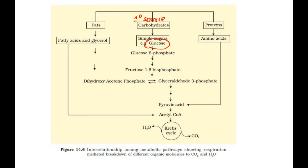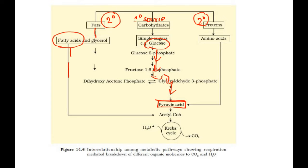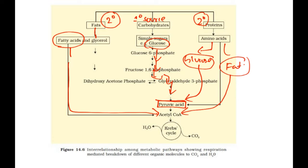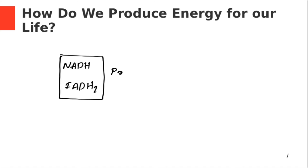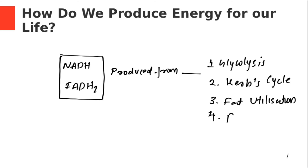To summarize the overview: carbohydrates are converted into glucose by digestion, then converted into pyruvic acid through glycolysis. The two secondary energy sources — fats and proteins — work as follows: fats are converted into fatty acids and then into acetyl coenzyme A; amino acids can convert into glucose to form pyruvic acid, or go directly into acetyl coenzyme A. NADH and FADH2 are produced from four sources: glycolysis, the Krebs cycle, fat utilization, and protein utilization.